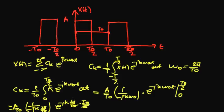The T0s cancel, 2 over 2 equals 1, minus the exponential of 0 is 1. So we will have A over T0, 1 over minus jk, 2π over T0. In this case we eliminate T0 with T0, and we get exponential of minus jkπ minus 1.